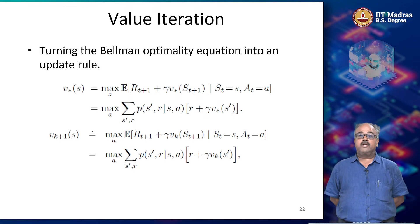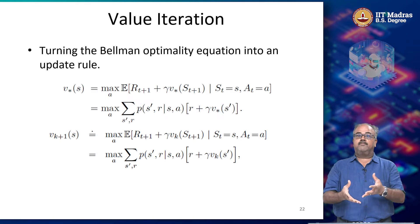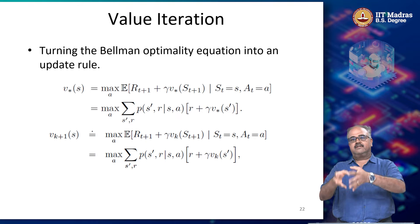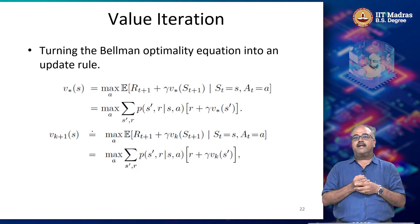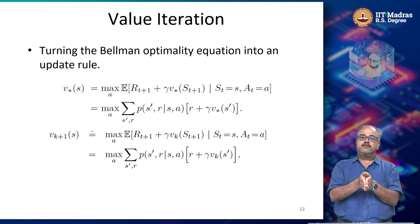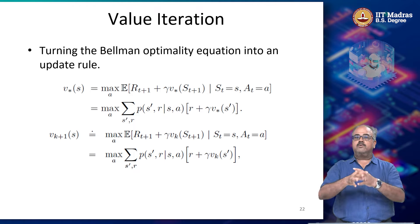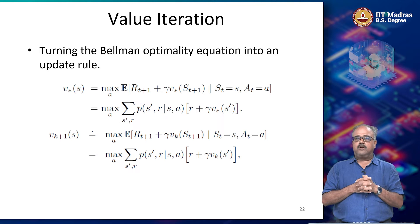In the last lecture, we looked at one approach to solving an MDP. What I mean by solving an MDP is: given an MDP, we have to find an optimal policy or an optimal value function. Given the states, actions, transition probabilities, rewards, and gamma — everything is specified — finding an optimal policy is still a hard problem. We started off by looking at how, given a policy pi, you find the value function for that policy pi. And once you can find the value function, how you can use that to define a better policy, and keep going until you reach an optimal policy and the corresponding optimal value function. This approach is called policy iteration.